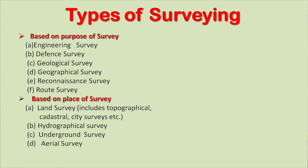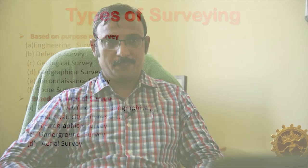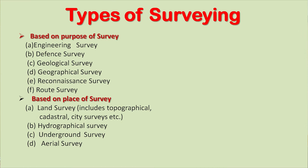What are the different types of surveying? We can classify surveying on different bases. First, based on purpose of survey, we have engineering survey, defense survey, geological survey, geographical survey, reconnaissance survey and route survey. Then based on place of survey, survey can be classified as land survey — which includes topographical survey, cadastral survey, city survey, etc. — then hydrographical survey, underground survey and aerial survey.